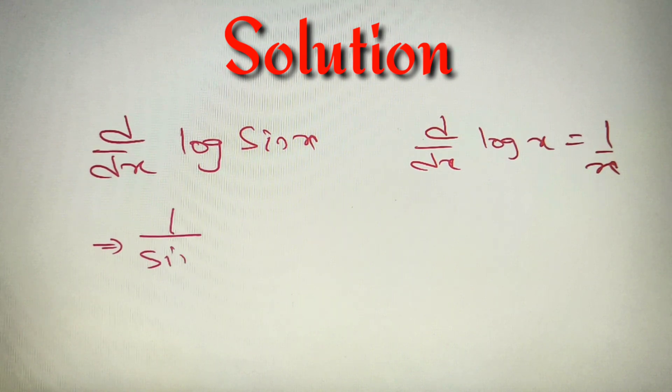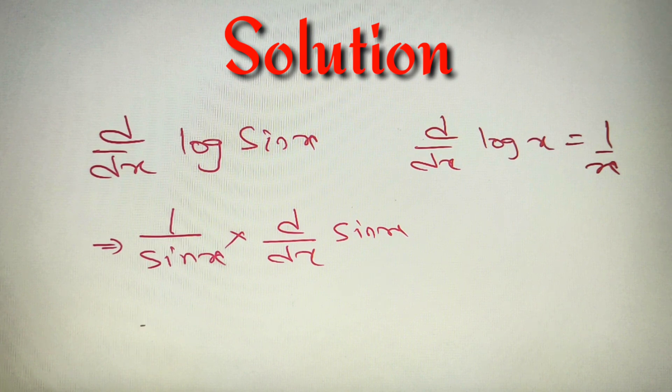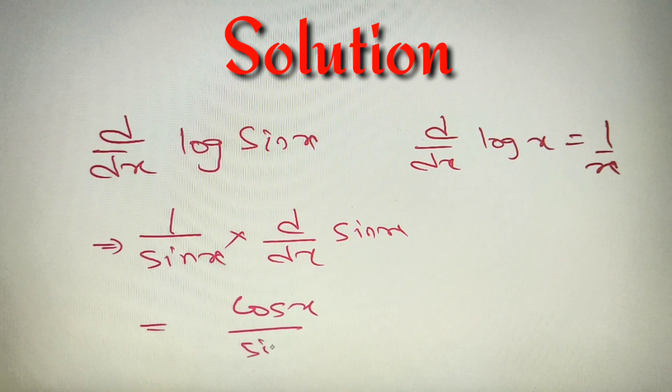First we'll write 1/sin x according to the formula, then apply the chain rule. We also have to find d/dx of sin x in the product. Now d/dx of sin x is simply cos x. So we get cos x divided by sin x.